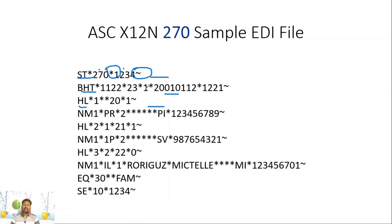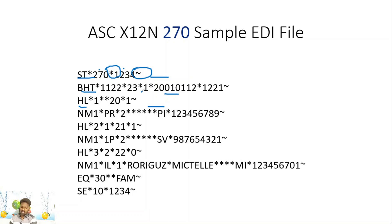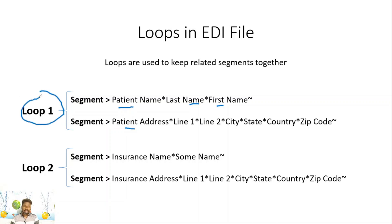We also have loops in an EDI file. Loops are used to keep related segments together. For example, in the first loop we have two segments: one for patient name and one for patient address. The patient name segment has two data elements — first name and last name — and the address segment has six data elements. Since these two segments are related to patient information, they are grouped into one loop. A second loop contains insurance information — insurance name and address — in two segments. Loops, segments, and data elements are the structural components of an EDI file.